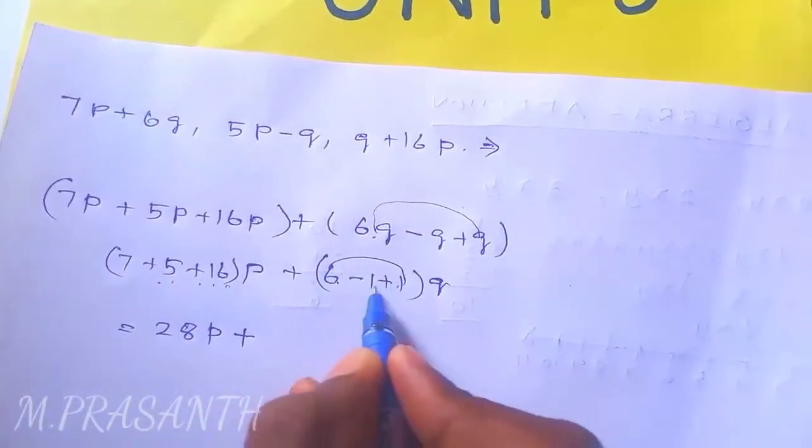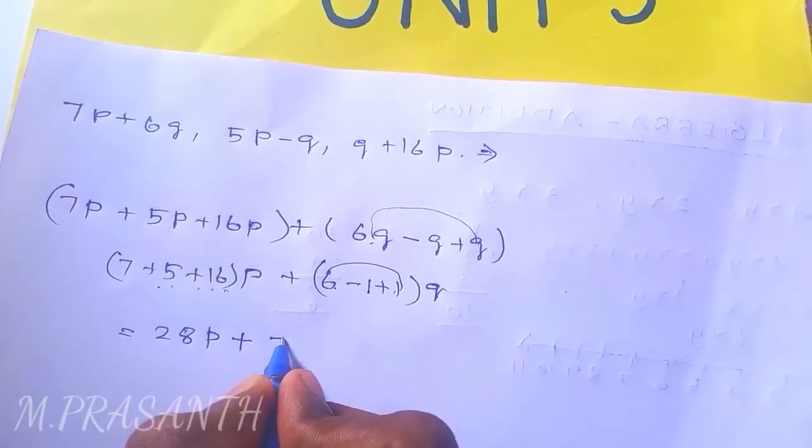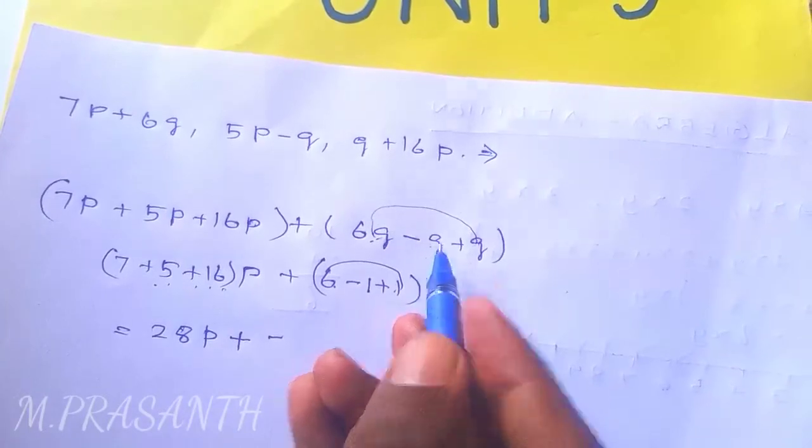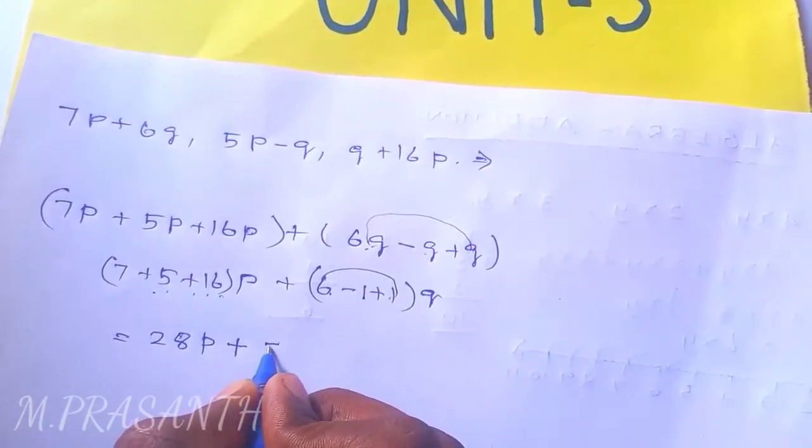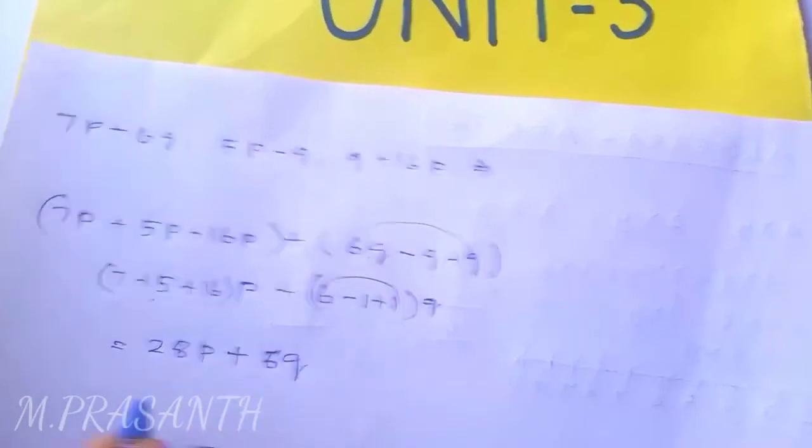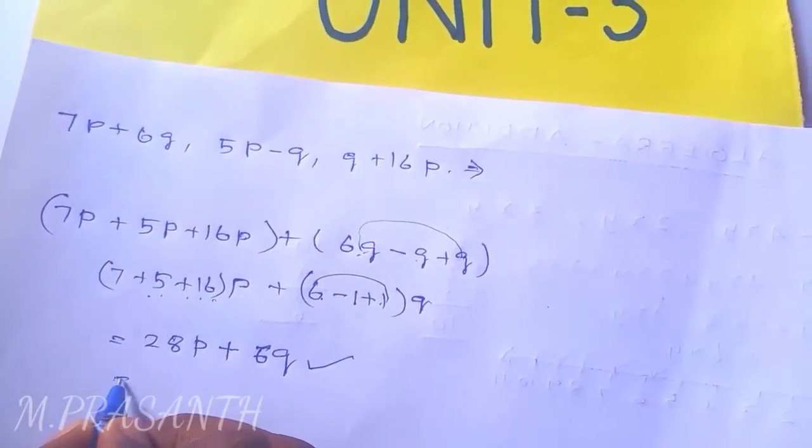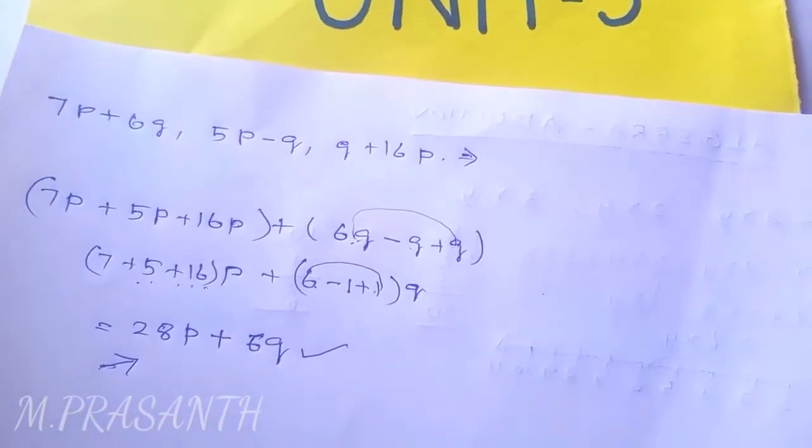And 6q minus q plus q - here all the plus numbers and separate the minus, so we get 6q plus q, that is equal to 7q. 7q minus q equals 6q.